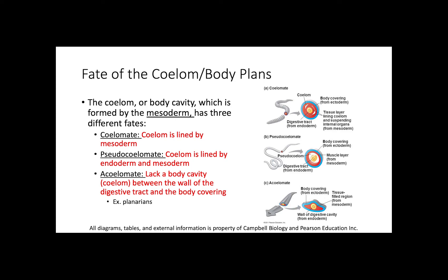Then there's a pseudocoelomate, in which the coelom is lined by both endoderm and mesoderm. In section B of this figure, you'll notice that the inner part of the coelom is lined by endoderm, whereas mesoderm still forms the outside layer encasing the coelom. And then there's an acoelomate. Acoelomates lack a body cavity altogether between the wall of their digestive tract and the body covering. Looking at the planarian at the bottom of the figure, part C, they are essentially completely solid — they don't have this empty body cavity.